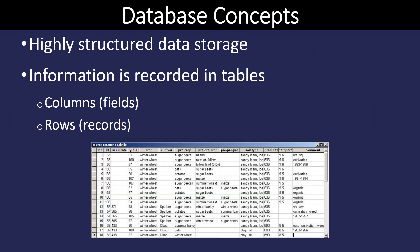So what is a database? A database is an organized collection of information. The information is stored in a structured manner for easy access. A database typically contains a table, as we see here on the slide, and the table is going to have columns and rows. It looks very much like an Excel spreadsheet.